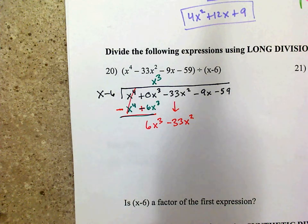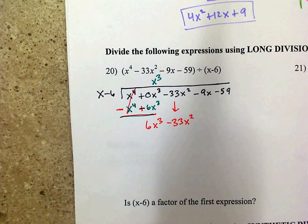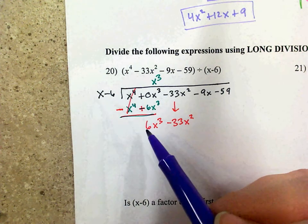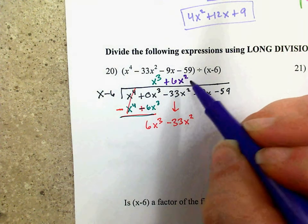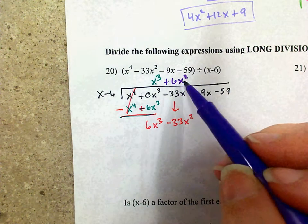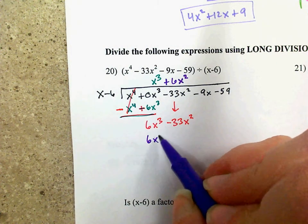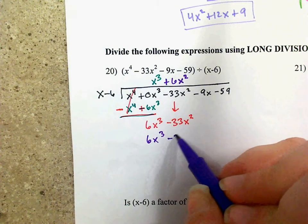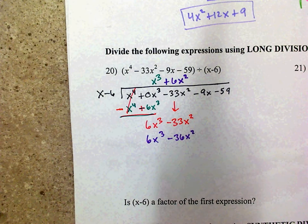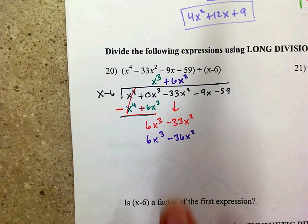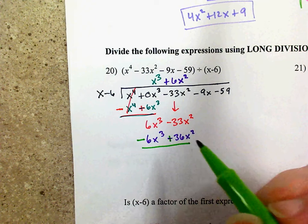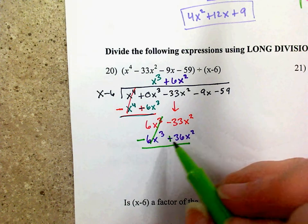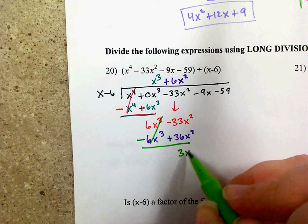Now I need to cancel out the 6x cubed. I have 1x and need a coefficient of 6, so I need 6x squared. 6x squared times x is 6x cubed, and 6x squared times negative 6 is negative 36x squared. Subtract by changing signs, those cancel out. Negative 33x squared plus 36x squared gives 3x squared. Bring down the negative 9x.